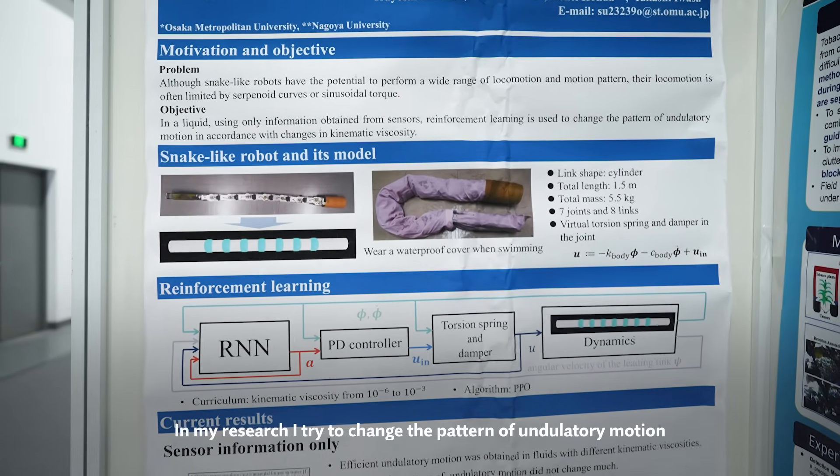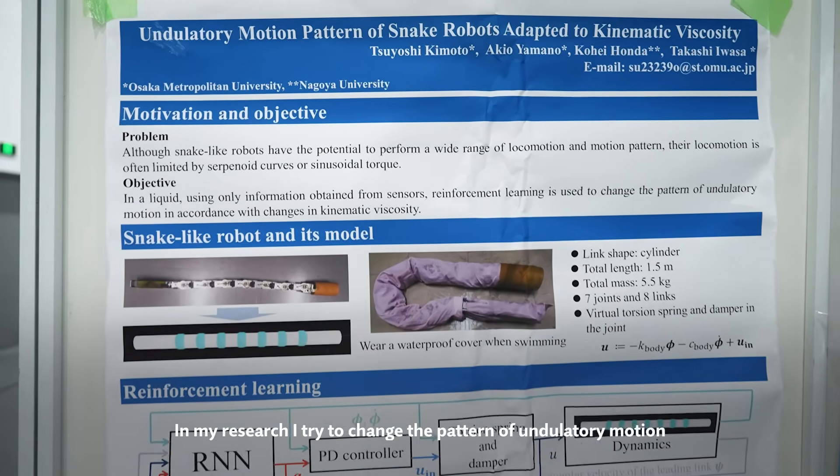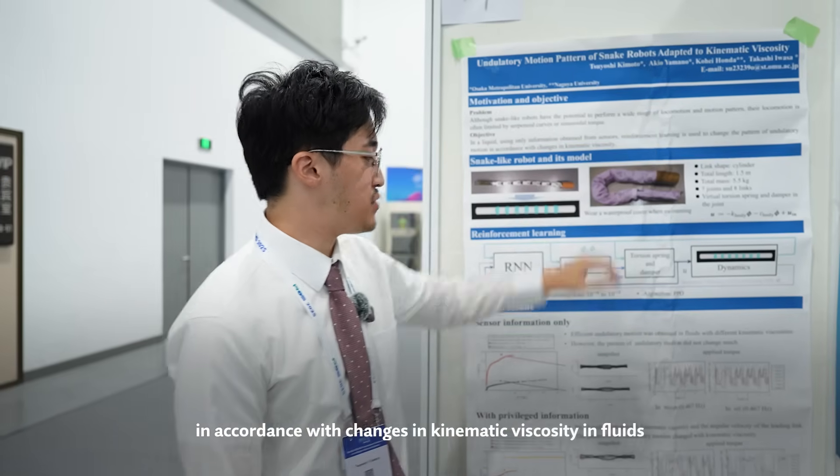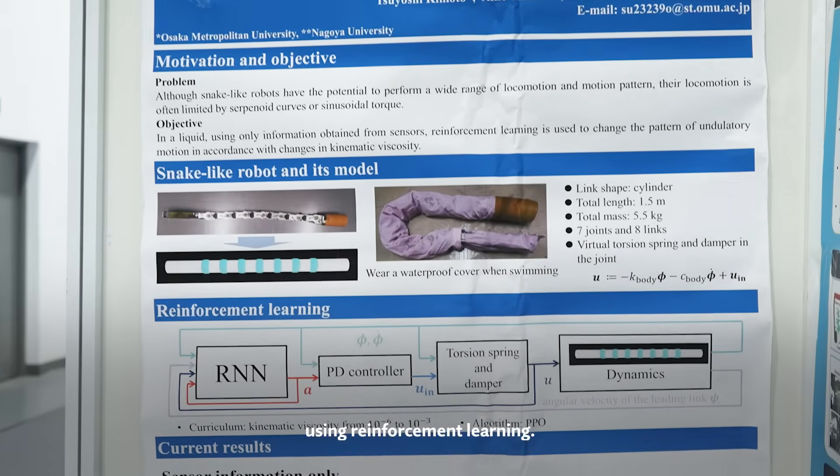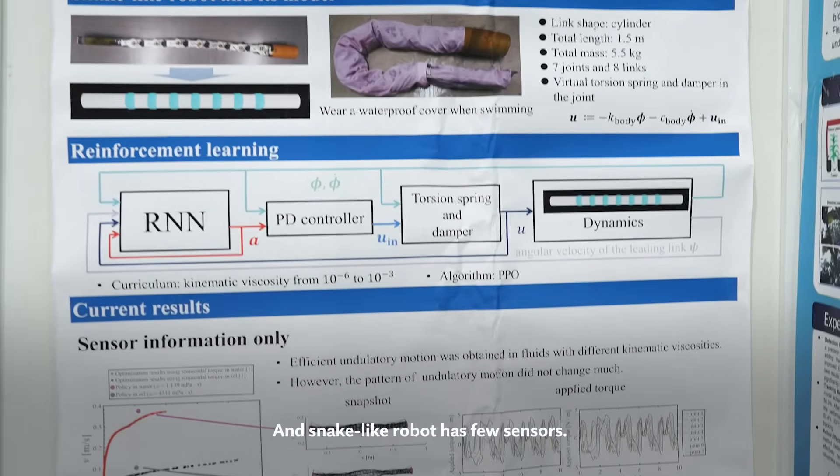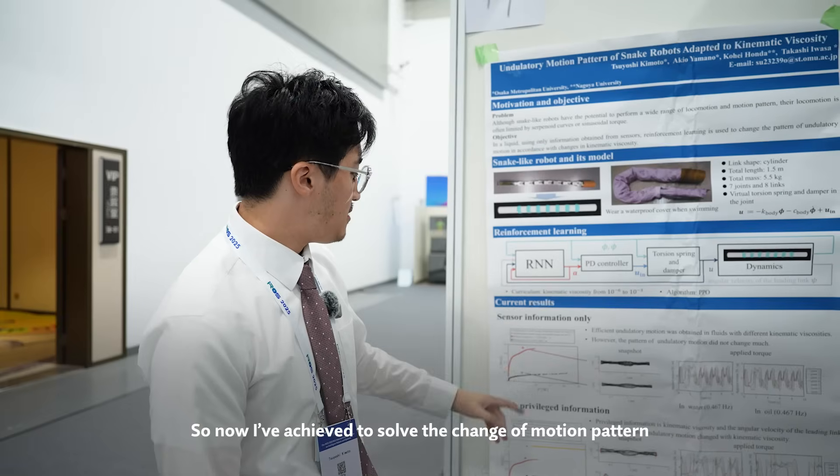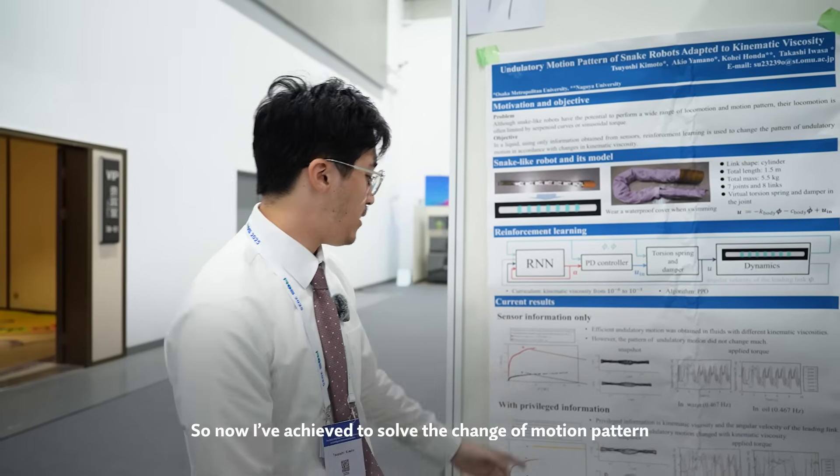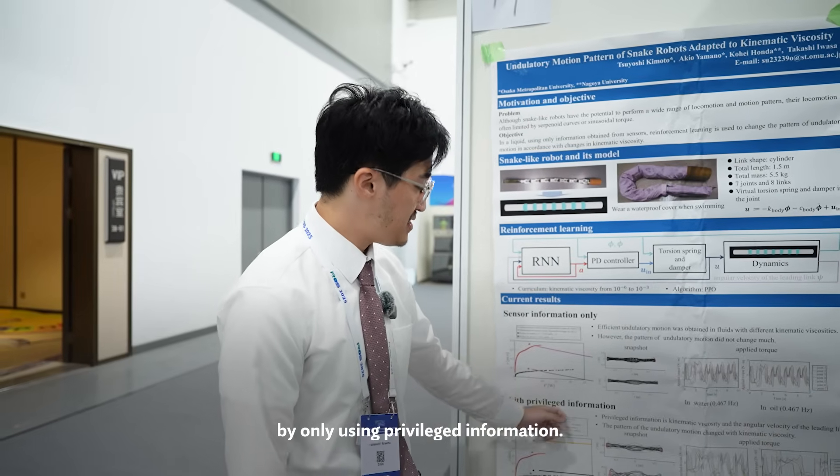In my research, I try to change the pattern of undulatory motion with change of the kinematic viscosity in fluids, using reinforcement learning. And the snake-like robot has few sensors, so I achieved the change of motion pattern only with proprioceptive information.